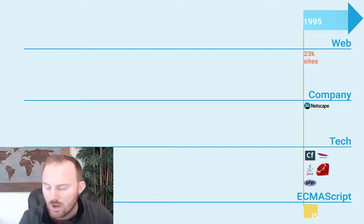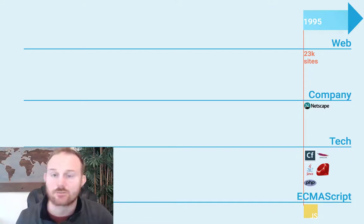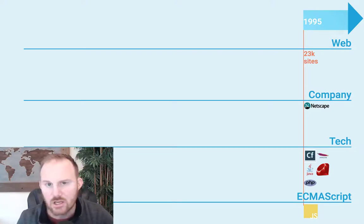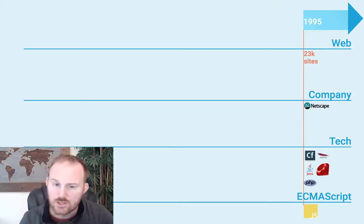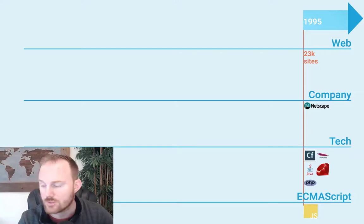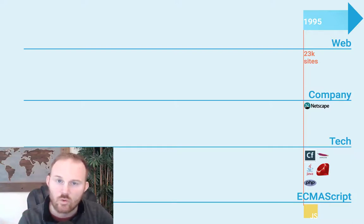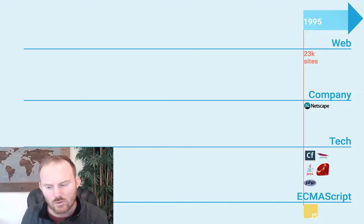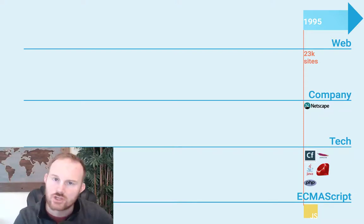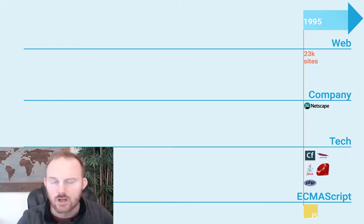It's actually called Mocha — for some reason all programming languages have to have something to do with coffee. Java was actually named Oak initially, so JavaScript would probably be called OakScript if that hadn't changed. Java is actually made by Sun Microsystems, and they're in the process of putting something together with Netscape because they want to run Java in the browser. Think like JSP or Java applets — so they're working on cutting this deal.